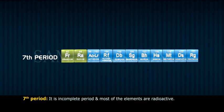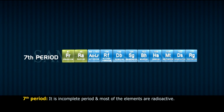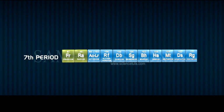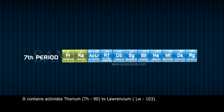The seventh period is an incomplete period and most of its elements are radioactive. The elements from francium, Fr-87, to hahnium, Ha-105, belong to this group. It contains actinides from thorium, Th-90, to lawrencium, Lw-103.